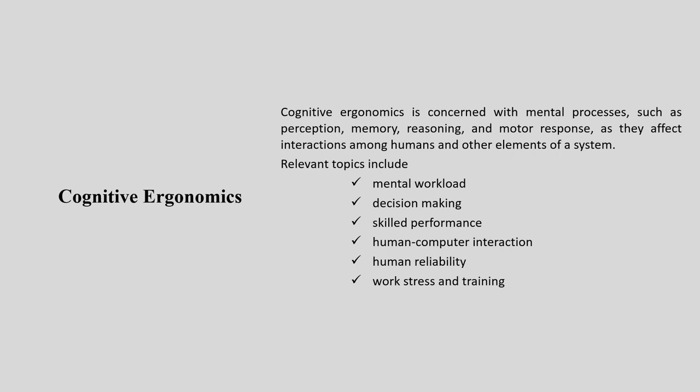Let us first start with the definition of cognitive ergonomics. Cognitive ergonomics is concerned with the mental process. Whenever we are talking about any ergonomics analysis connected with our mental process — how do we perceive, how do we think, how do we act upon the responses we receive — all mental processes such as perception, memory, reasoning and motor responses as they affect the interaction among humans and other elements of the system.